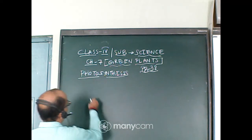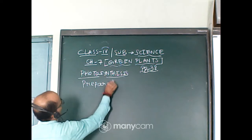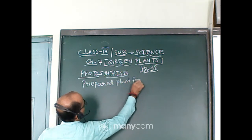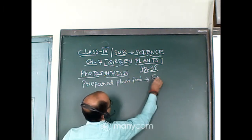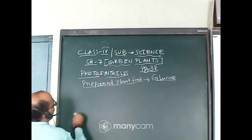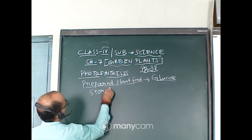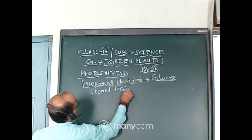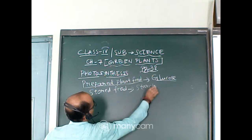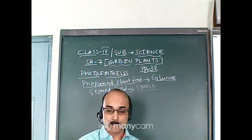So prepared plant food is glucose, and stored food is starch. We are storing it as starch in the roots, stem, leaves.